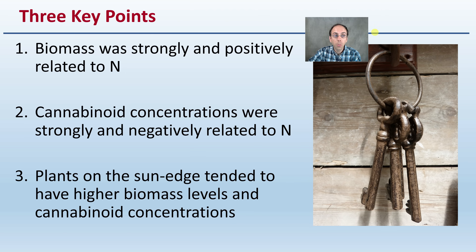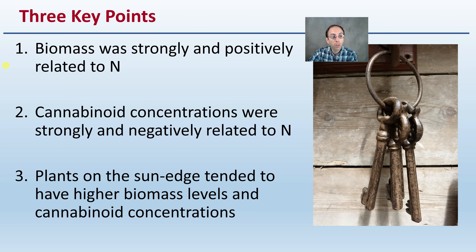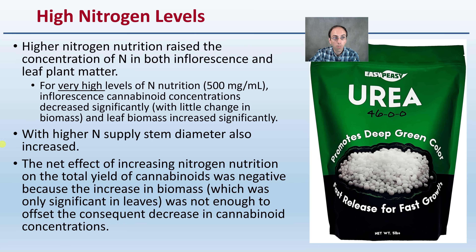The key points are: biomass was strongly and positively related to nitrogen fertilizer; cannabinoid concentrations were strongly negatively related to nitrogen; and plants on the sun edge tended to have higher biomass levels and cannabinoid concentrations compared to those grown in the row.